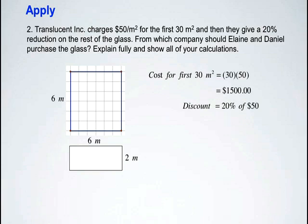Now the next part of the question talks about a discount for the remainder of the glass. The discount is 20% off of $50. So we're going to do 20% of $50, which is 0.2 times 50, giving us a $10 discount for each meter squared for the rest of the glass. So our discount price is $50 original price take away the $10 discount, which is $40 per meter squared for the remainder of the glass.